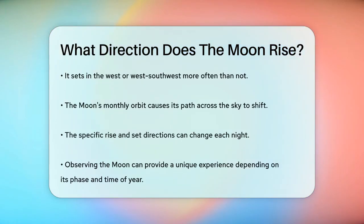So, to answer your question, the Moon generally rises in the east, but it can rise in the east-northeast or east-southeast, depending on the time of year and the Moon's phase. Similarly, it sets in the west, but can set in the west-northwest or west-southwest. This makes every night a bit different when you're watching the Moon rise and set.